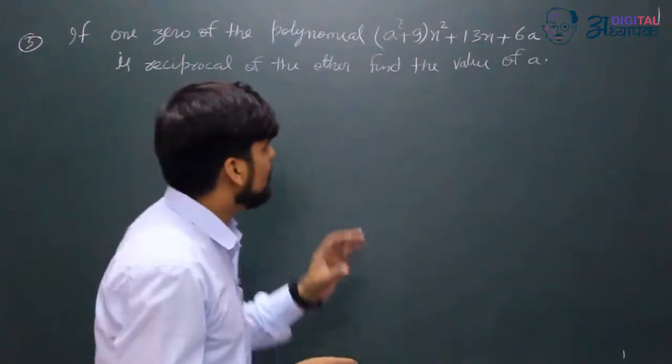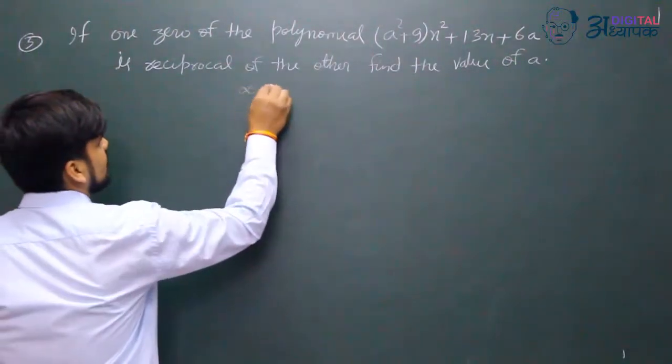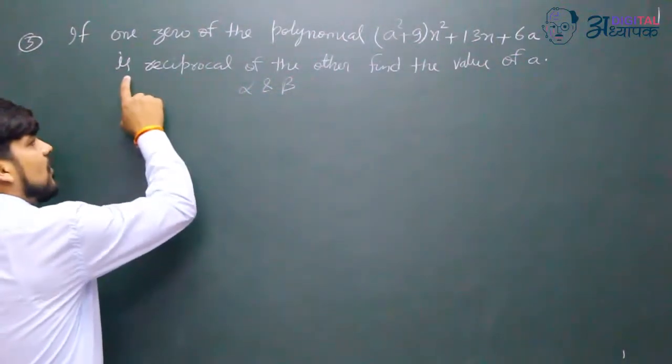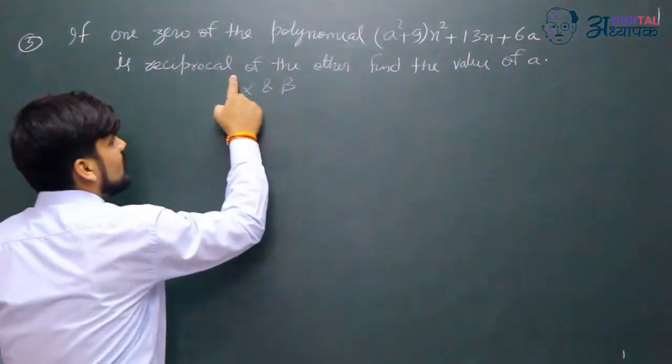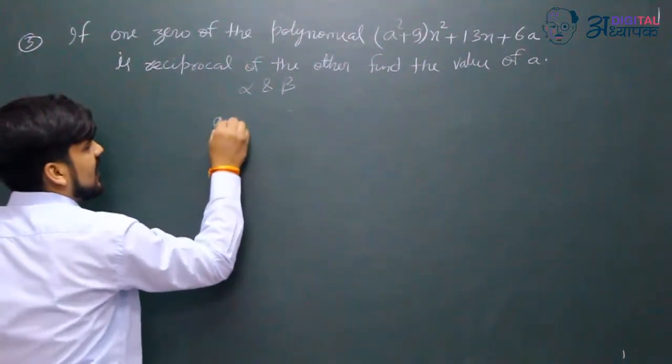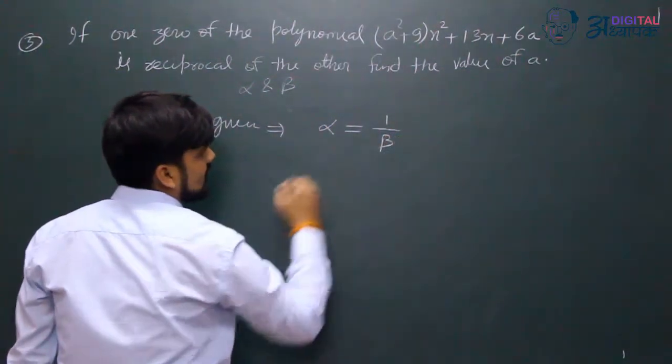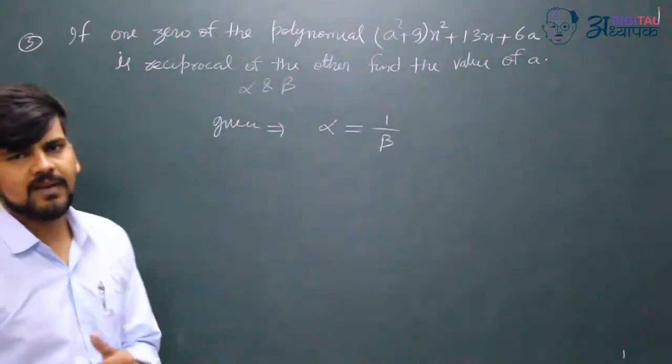Here we have two zeros because this is a quadratic equation. Given that one zero is the reciprocal of the other, alpha value is 1 upon beta.